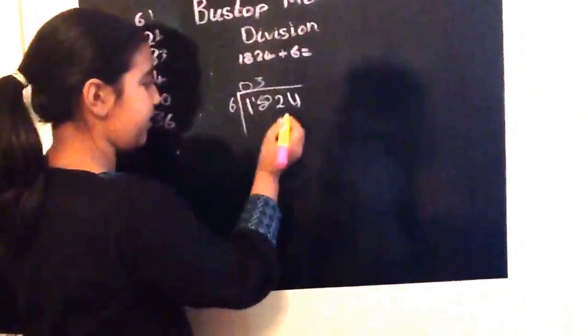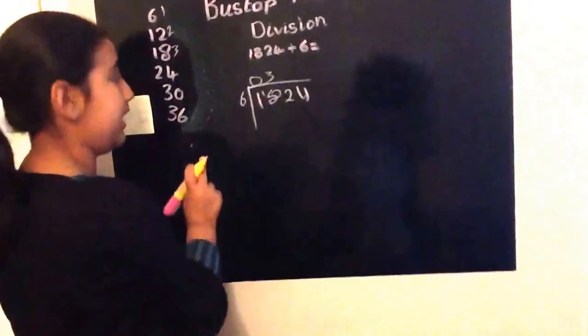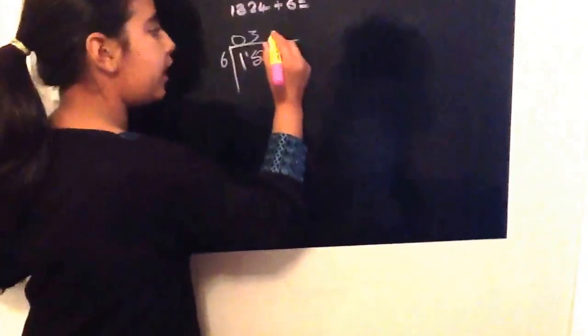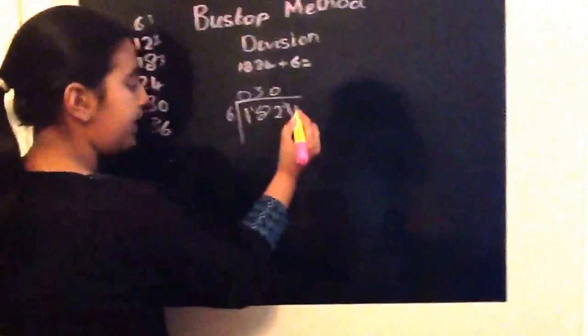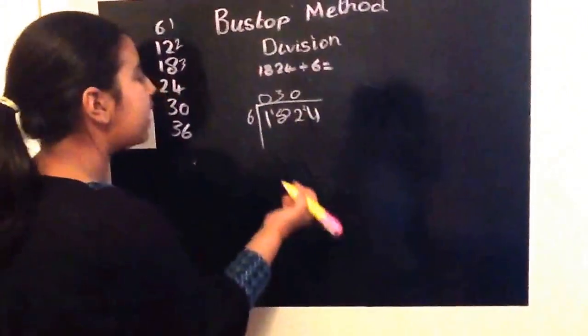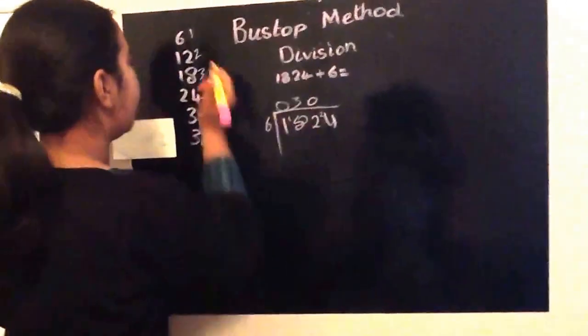How many sixes go into two? There isn't any here, so we just put a zero. And we carry the two onto here. That makes twenty-four.